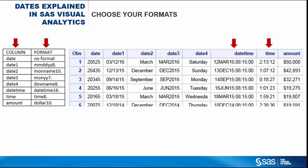The numbers in the date column represent a SAS date value with no format associated. This means it's simply a numeric value representing a number of days. Date values are stored internally as numbers in order to enable calculations on dates, such as the number of days between two dates.